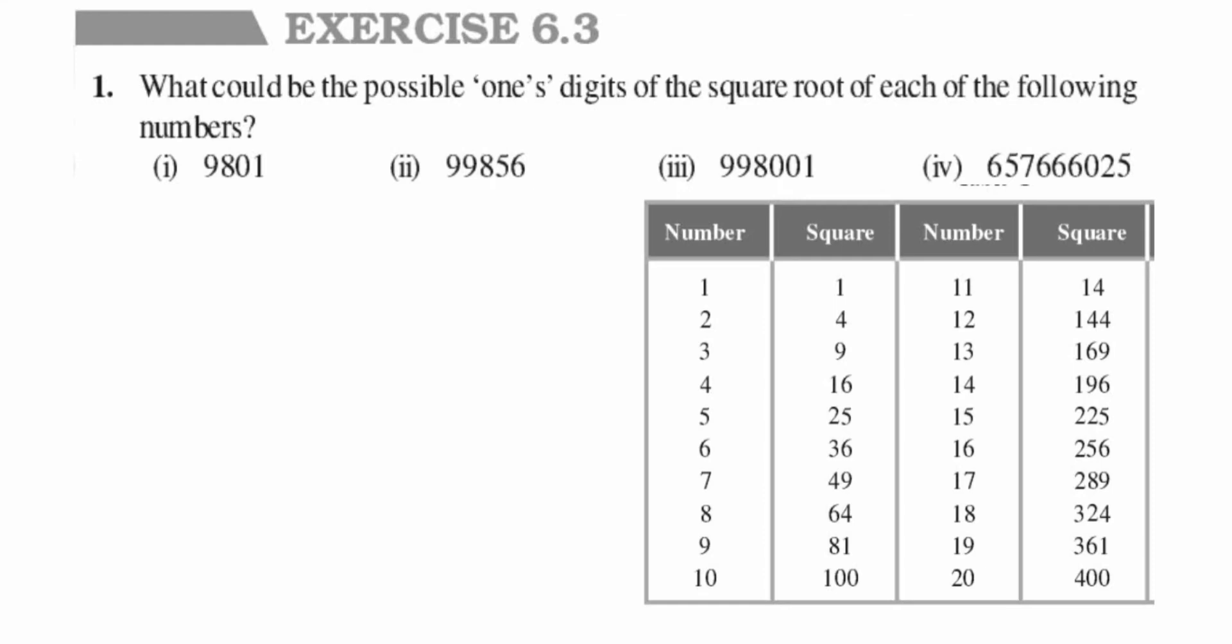Hey everyone, I'm doing Exercise 6.3 of the square and square root chapter. This is the first question. The question is: what could be the possible ones digit of the square root of each of the following numbers? They have given us four numbers and we have to find out if we take the square root of these numbers, what will be the ones digit in the square root.